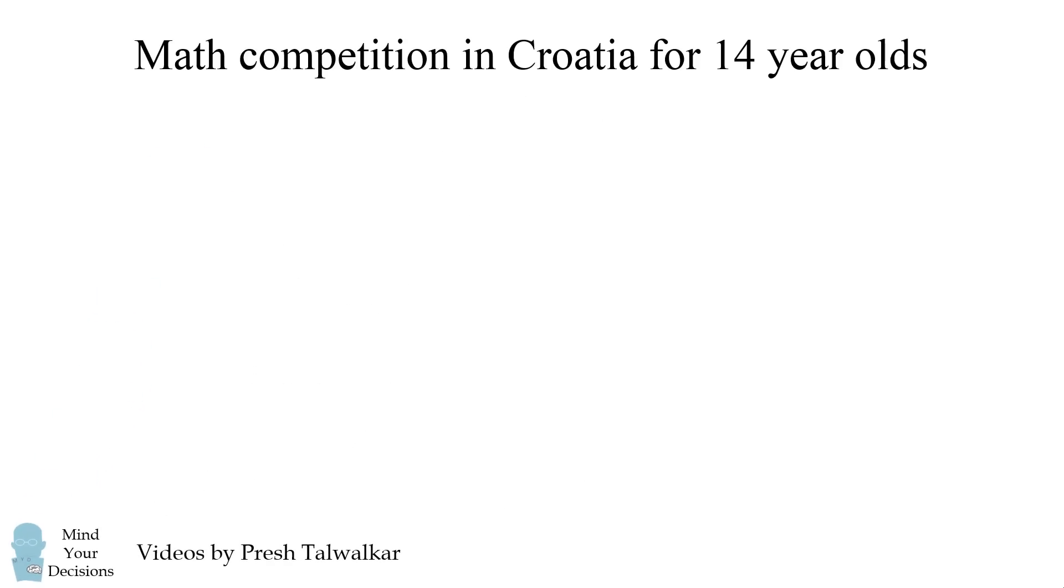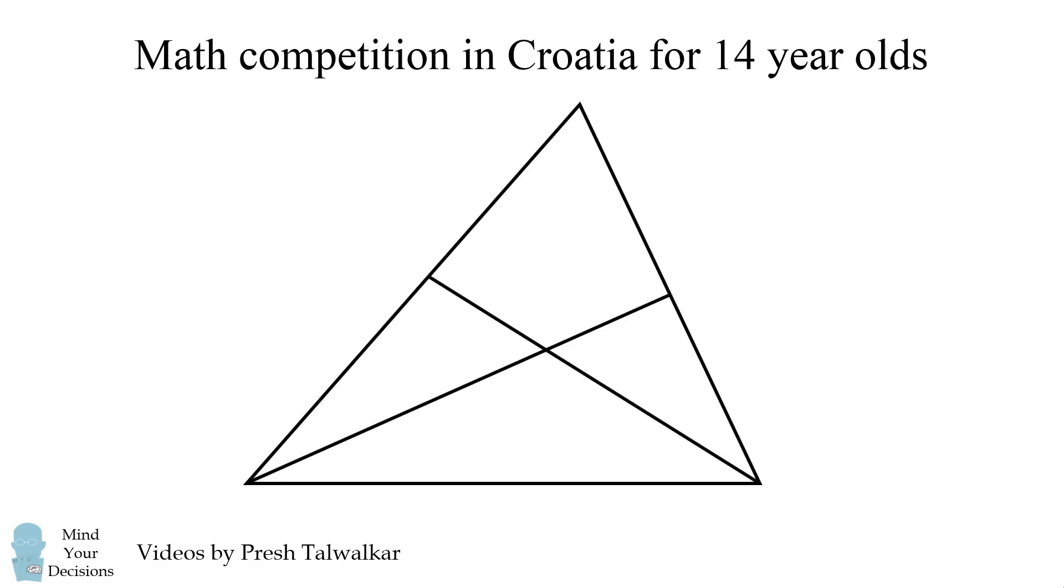This problem comes from a math competition in Croatia for 14 year olds. Start with a triangle. From one vertex, draw a line segment to the opposite side. Do the same thing from another vertex.